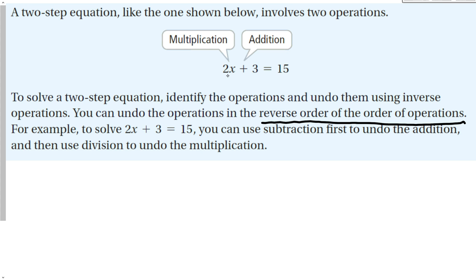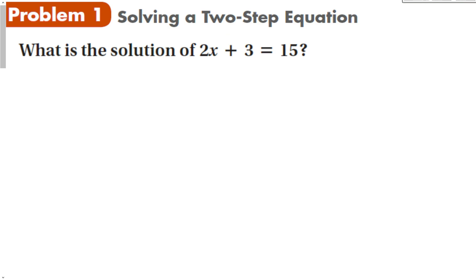Because if we were going to evaluate this — say x is equal to 2 — the first thing you would do is multiply by 2, and then add the 3 to your answer. So to solve this equation, we're going to do this backwards: we're going to undo addition and subtraction first, then we're going to undo the multiplication.